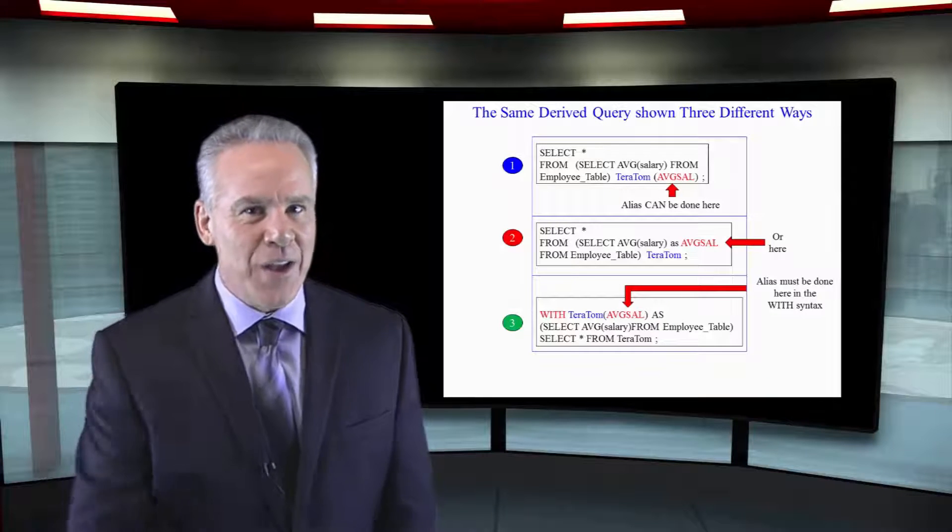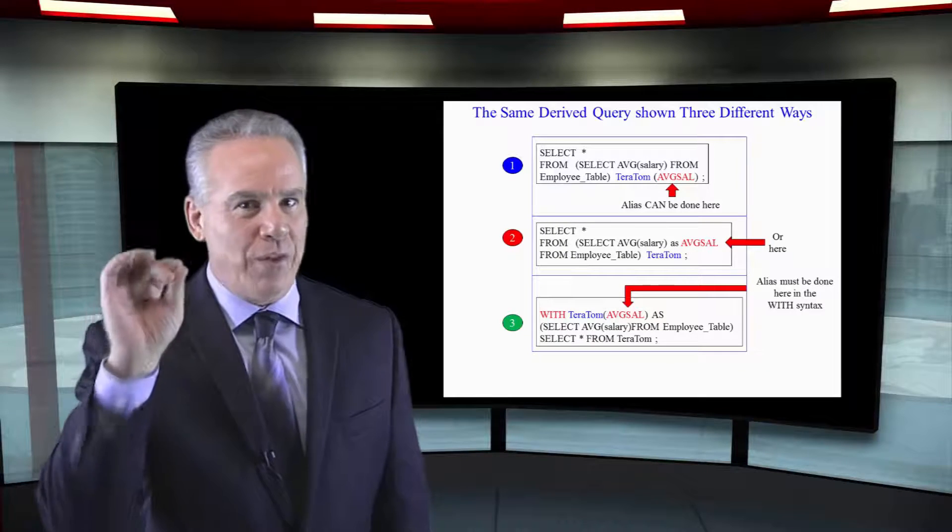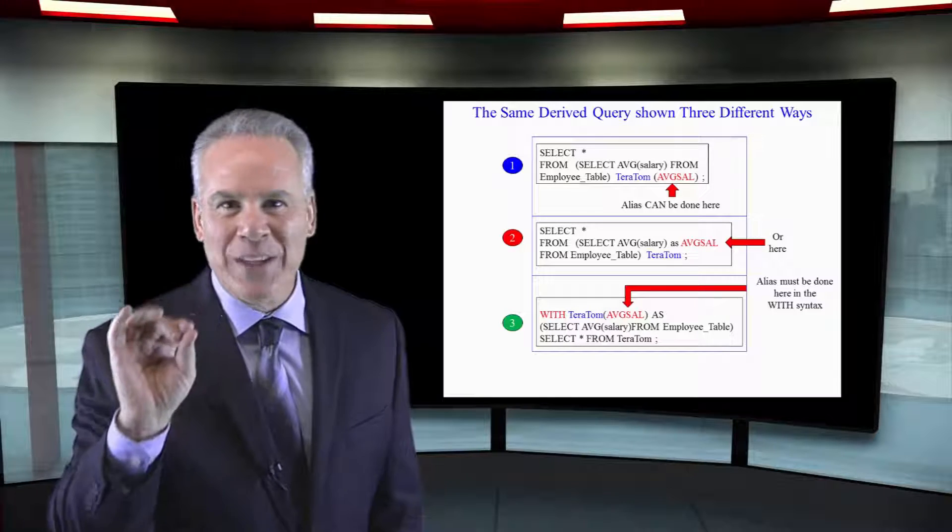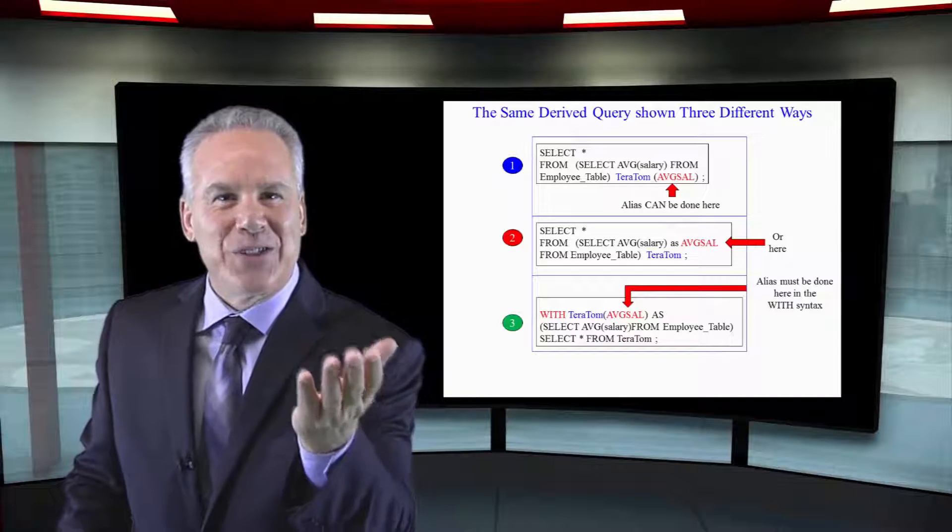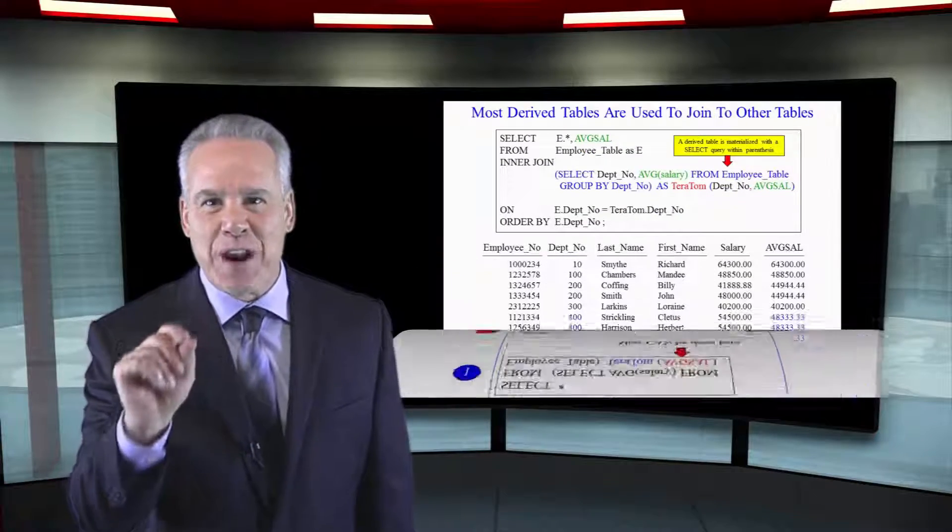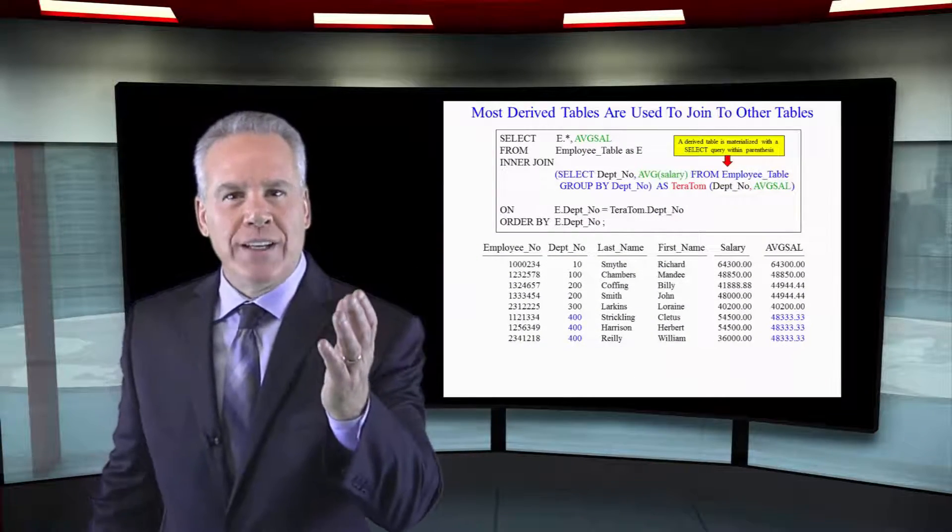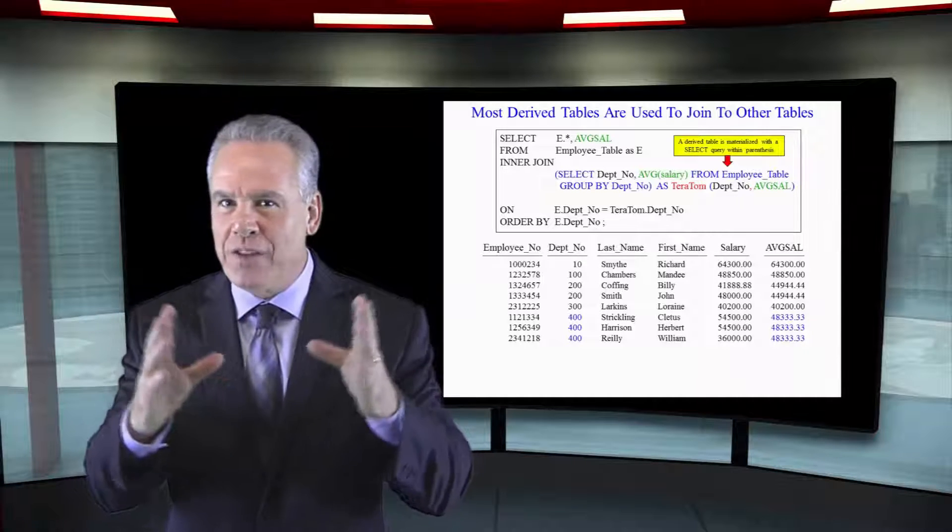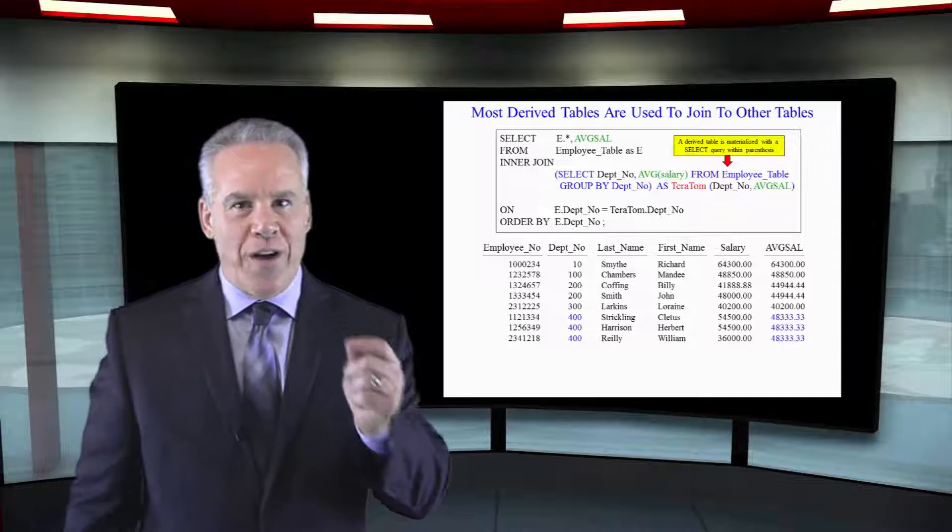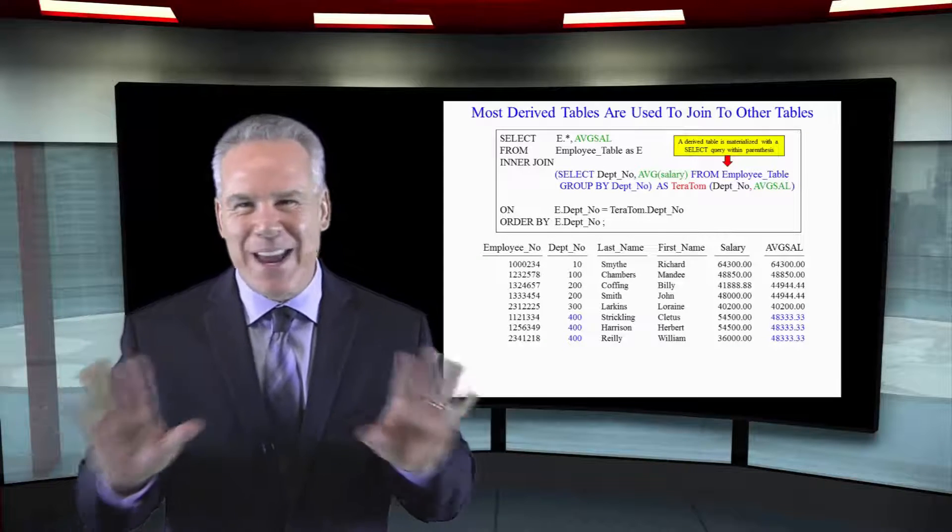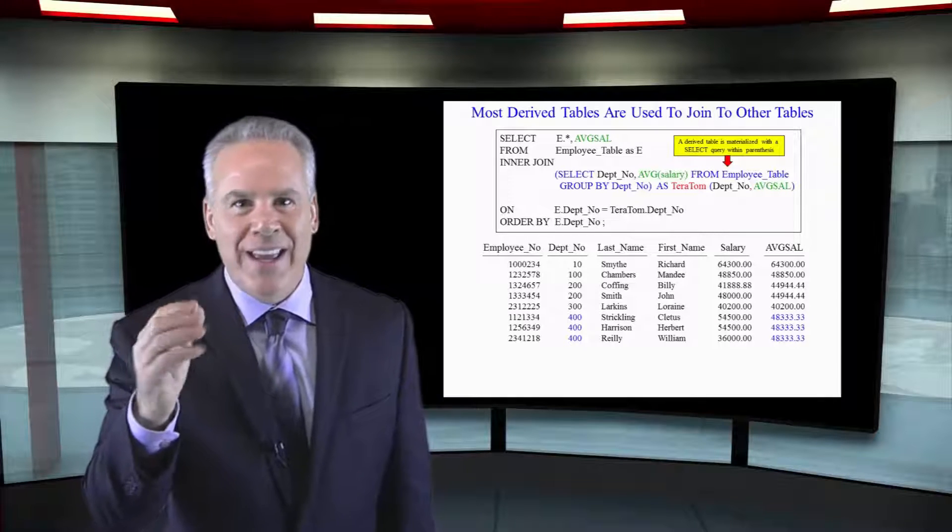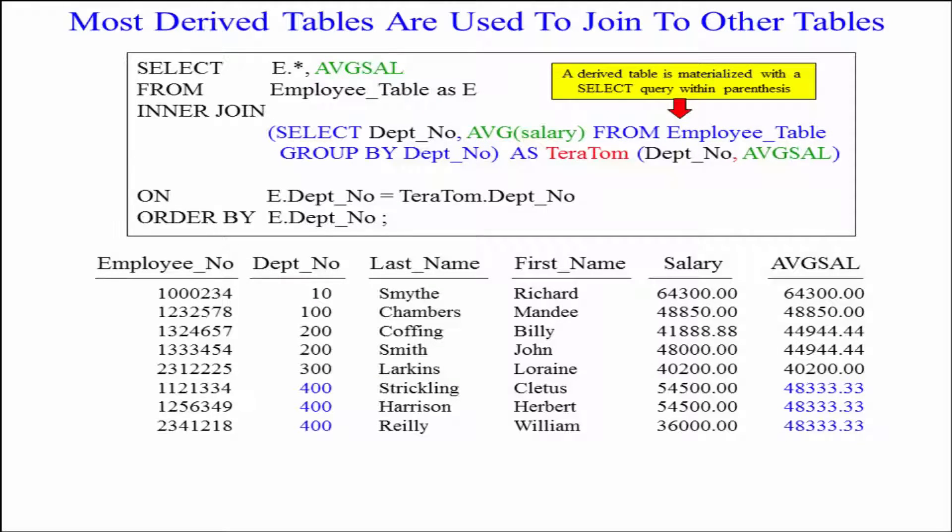We've done the same thing three ways, and we've created a derived table, and that derived table will only last for the life of this query. Get these down. This is going to be very important. This is a perfect example of how you'll see derived tables often created. They'll be joined to other tables, and quite often they'll be using aggregation. Sometimes aggregation is tough to work with, but you put it in a derived table, and it works really cleverly. Watch this.